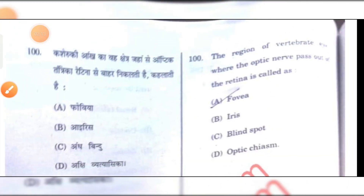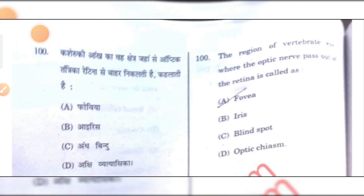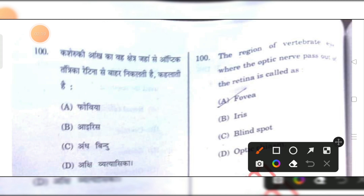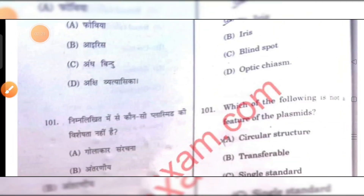The region of the vertebrate eye where the optic nerve passes out to the retina is called the blind spot. C is the right answer.